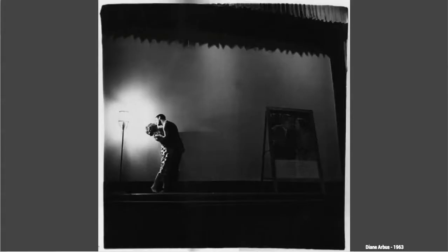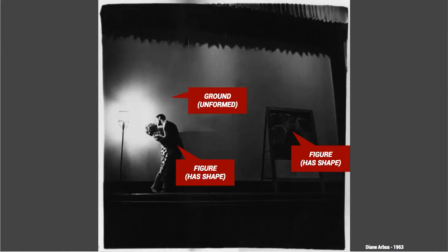Here's a photo by Diane Arbus, one of my favorite photographers. It's immediately clear what the subject is because the subject is the figure. The two lovers on the left have a shape we recognize, and the poster on the right also has a shape we recognize. So these two elements become the figures. The background — whether it's a wall or a screen — is unformed. There's no shape to it, no information. So we immediately see this image as being about intimacy.